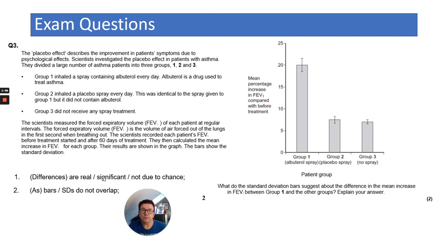Notice how simple that answer is. You do not have to write an essay. It's only two marks. But it's not due to chance. It's not saying albuterol actually increase the FEV1. It's just saying that it's not due to chance. It's most likely to be albuterol. But you can't actually say that from this data. But it's not due to chance as the standard deviation bars do not overlap. So group one does not overlap with group two and group three.